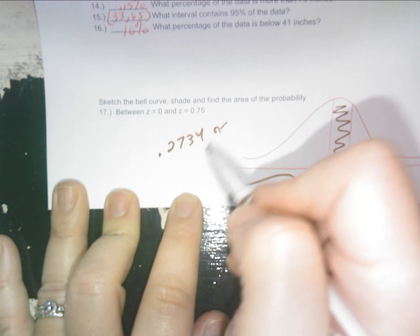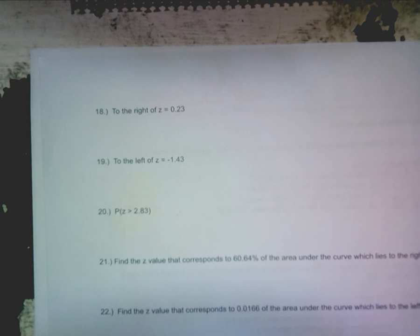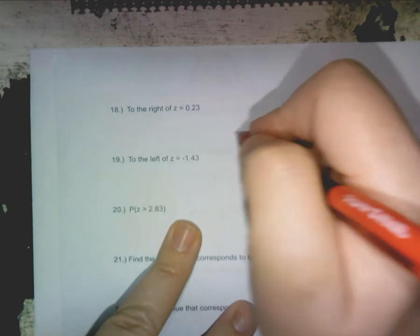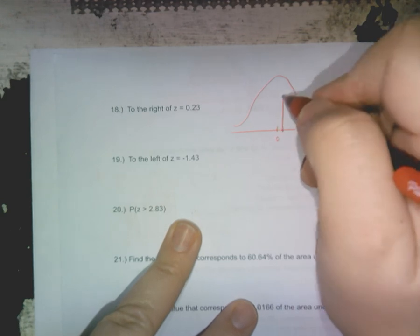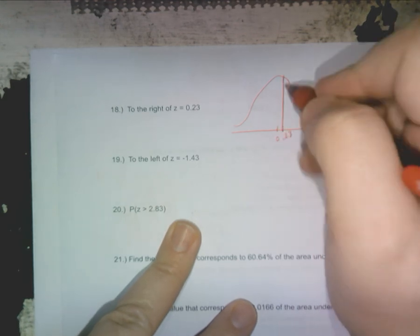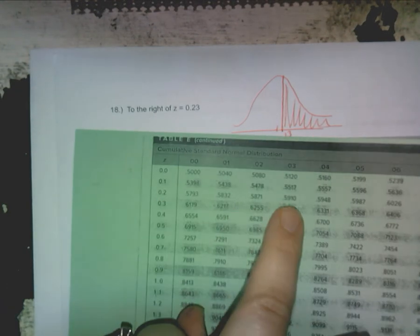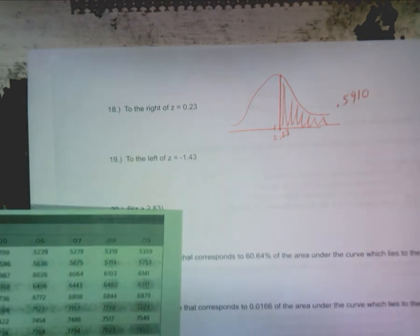Moving on, almost done. All right, find the, sketch the bell curve and find the area with the probability to the right of 0.23. So again, here we go, shade. Here's zero, here's like 0.23, would probably be right here as my z, shade to the right. Go on your lovely little thing, 0.23 is 0.5910.